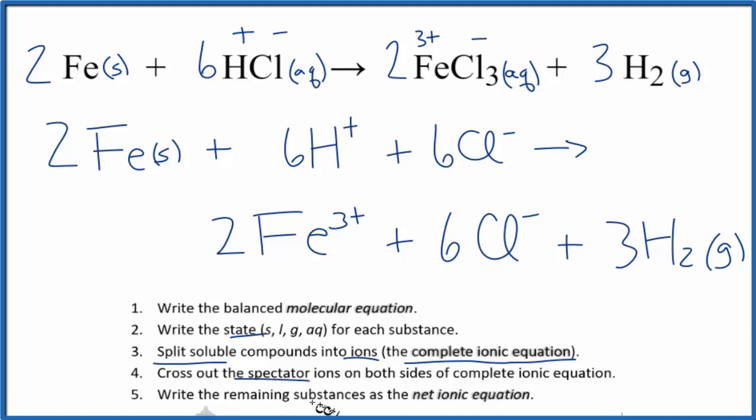Now we cross out spectator ions. These are the ions that appear on both sides of the equation. In effect, they're not changing. They're the same. So if you look at the Cl minus here, we also have Cl minus six of them in the products. So we have six here, six here. They haven't changed. We can cross them out.